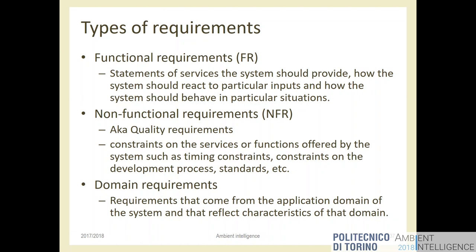For example, a functional requirement might be: when the user clicks on the profile icon, he gets a list of the last 100 actions. Then a non-functional requirement adds: this list should be delivered in less than 200 milliseconds. That timing requirement is a constraint on the execution of the function, not a function itself. Non-functional requirements include speed, hardware constraints, and so on.